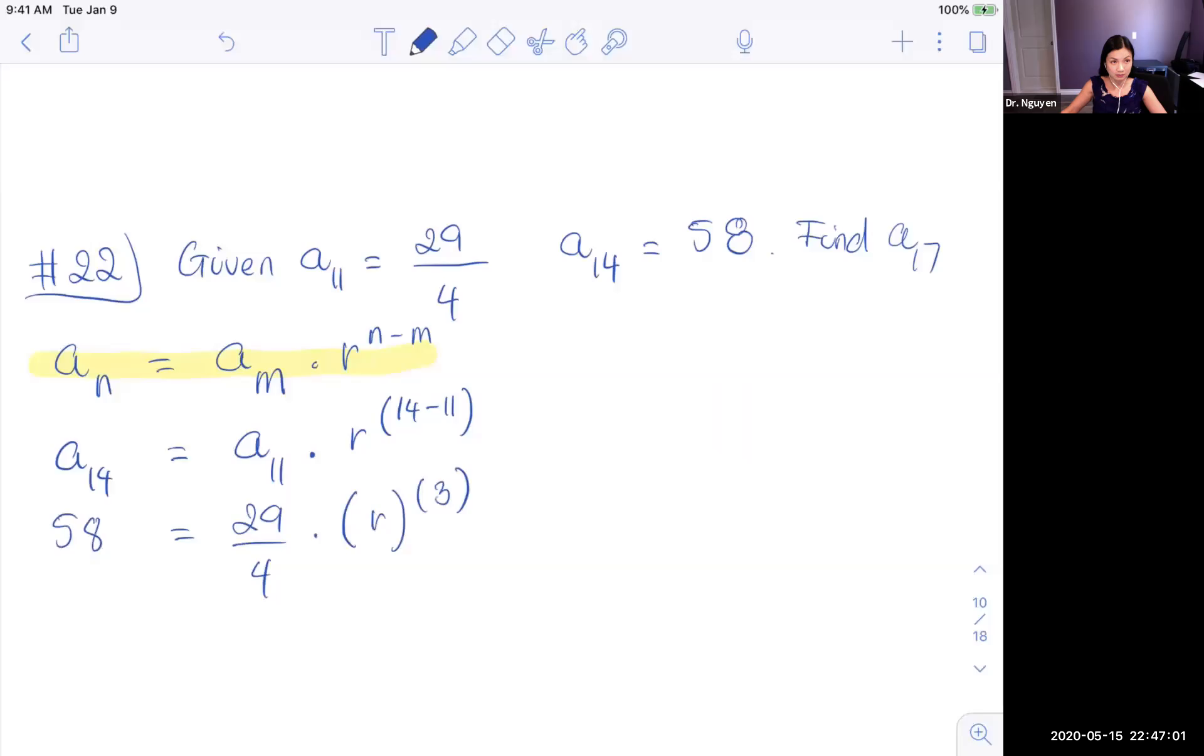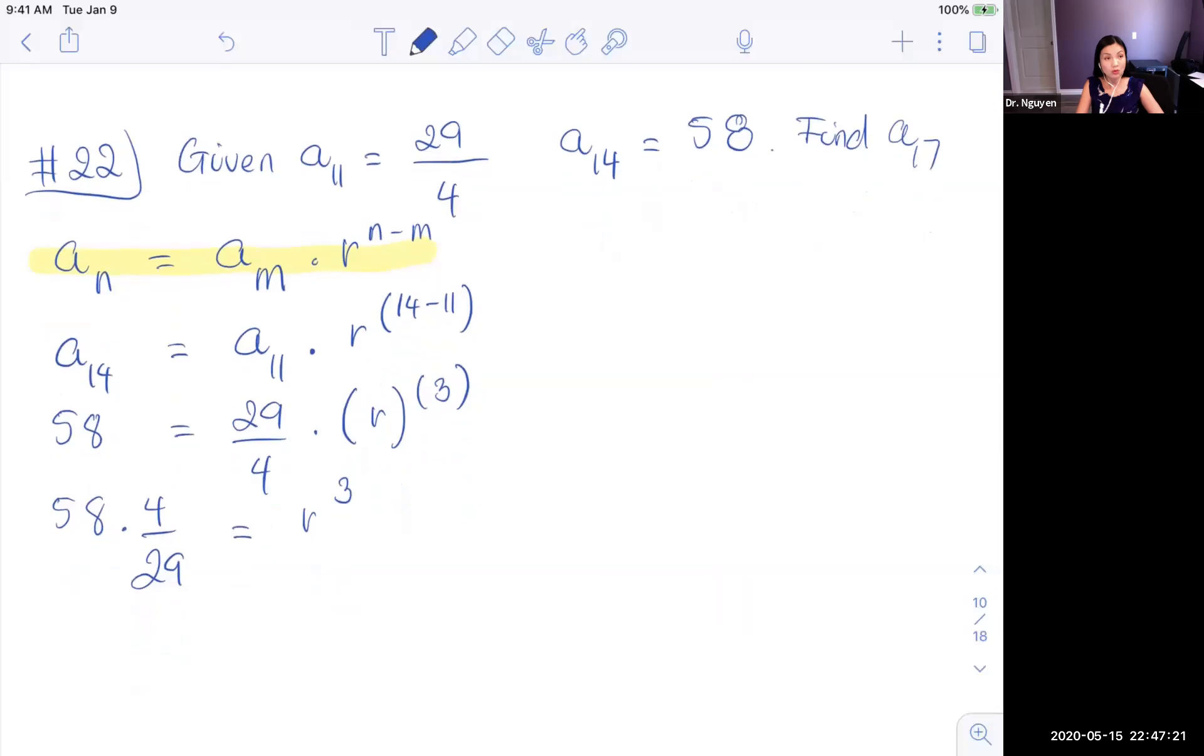That's going to give me R cubed. So if you simplify that, 58 times 4 over 29, you're going to end up with 8 equals to R cubed. So if I take the cube root, I'm going to get R equals 2.